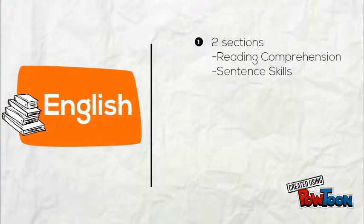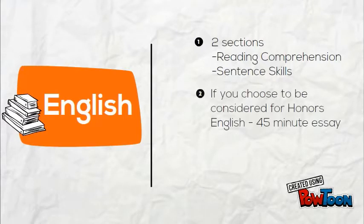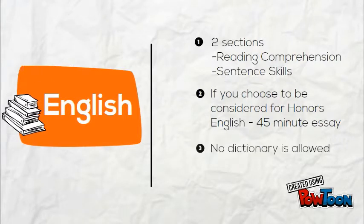The English assessment test has two sections: reading comprehension and sentence skills. If you choose to be considered for Honors English, you may be prompted to write a 45-minute timed essay at the end of your exam. No dictionary is allowed during this test.